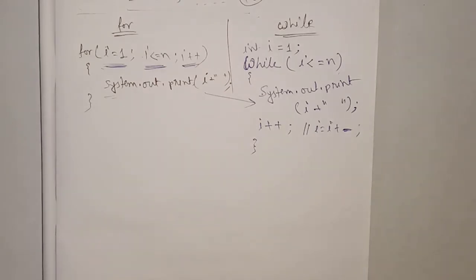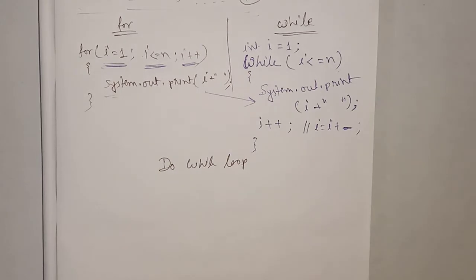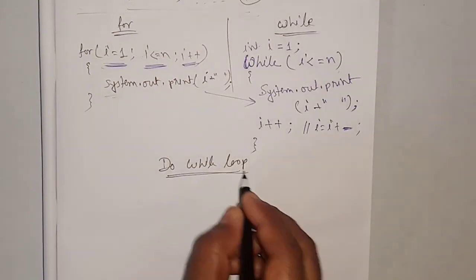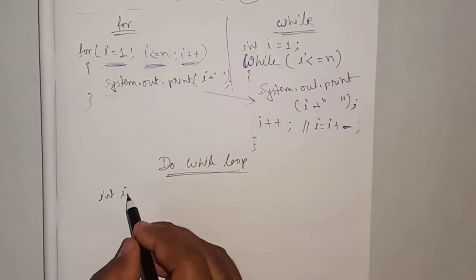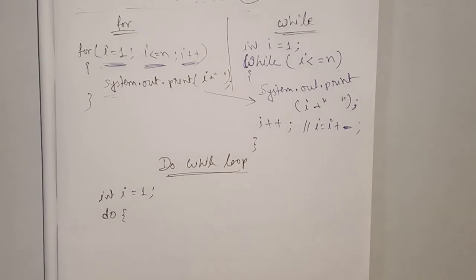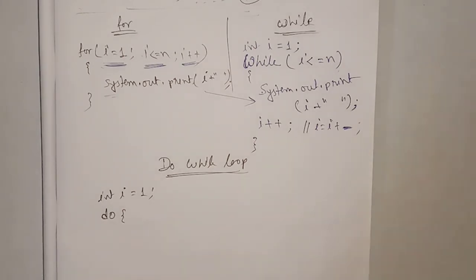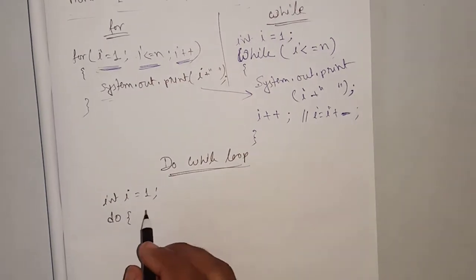I will also explain the do-while loop. In Java there are three defined loops: one is for loop, one is while loop, and another one is do-while loop. For do-while loop, same int i as in while loop. First I am writing do, then the opening bracket. Do-while loop is called exit control loop — before exiting from the entire loop we need to check the condition. Here, before entering we are checking the condition; here, after executing we are checking the condition.